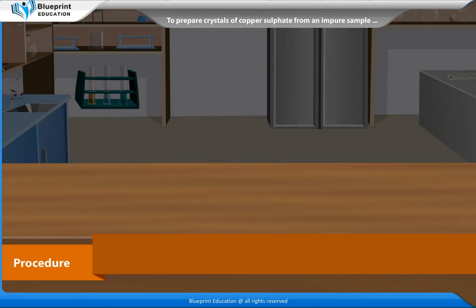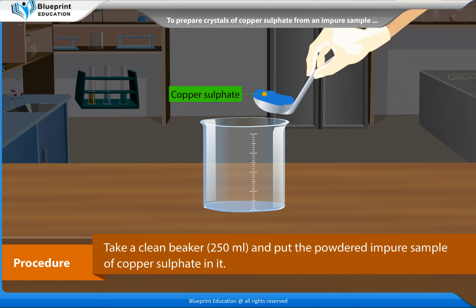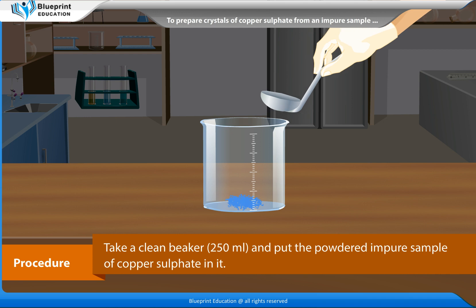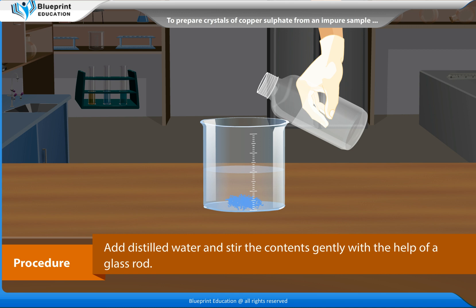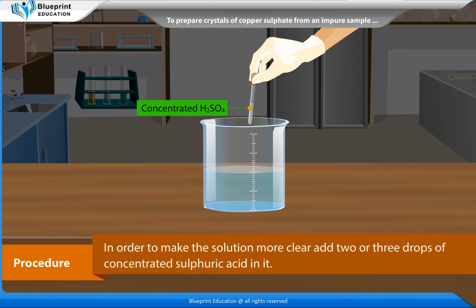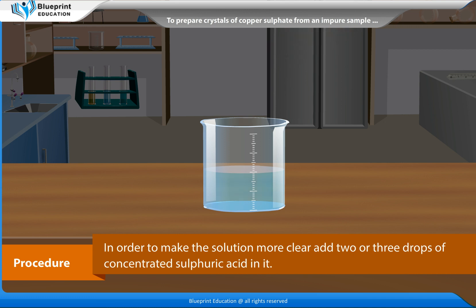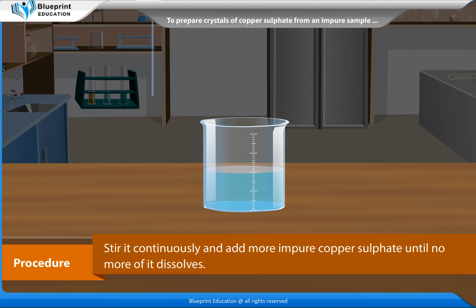Procedure: Take a clean 250 ml beaker and put the powdered impure sample of copper sulphate in it. Add distilled water and stir the contents gently with the help of a glass rod. In order to make the solution more clear, add 2 or 3 drops of concentrated sulphuric acid in it. Stir it continuously and add more impure copper sulphate until no more of it dissolves.